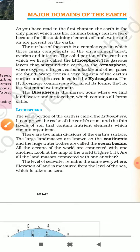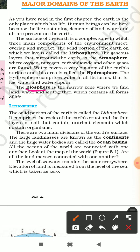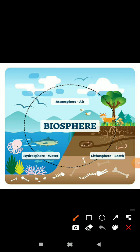The fourth component of the Earth is the biosphere. Biosphere is the narrow zone where we find land, water and air together, which contains all forms of life. Biosphere includes the lithosphere (earth), atmosphere (air) and hydrosphere (water). In reality, a biosphere looks like an area where you will find water, land and air together.